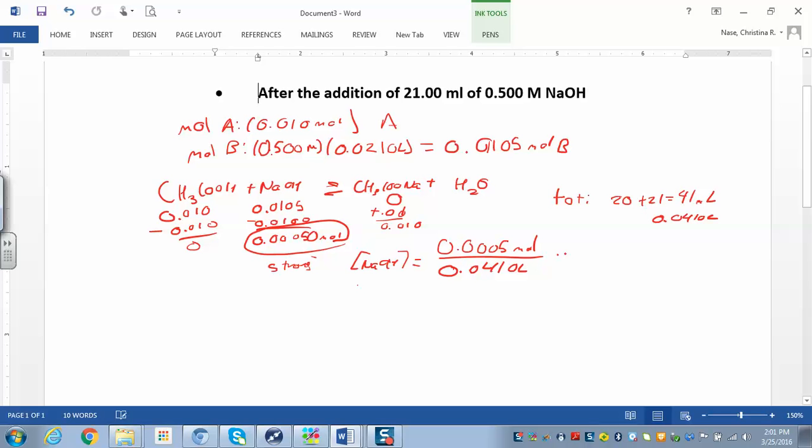So when we work that out, we get the concentration of our hydroxide ions, because it's sodium hydroxide, and we've got 0.012 molar.